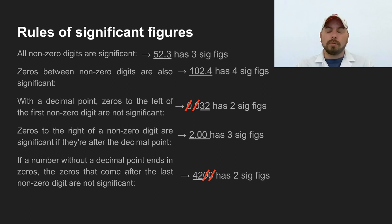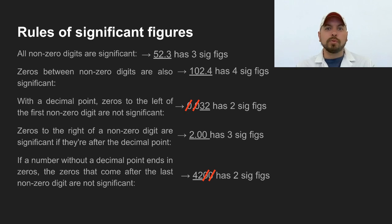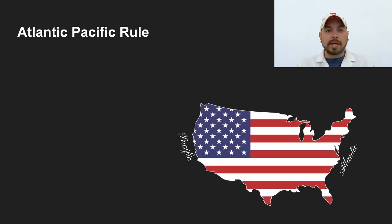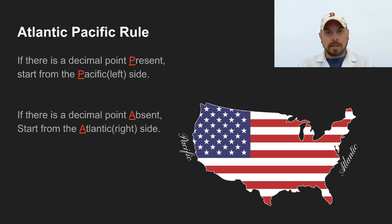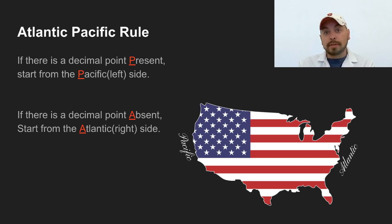If you're struggling with all those rules, here's a trick called the Atlantic-Pacific rule. The Atlantic Ocean is on the right side of the United States, and the Pacific Ocean is on the left side. If a decimal point is present — like the Pacific — you start on the Pacific side, the left side, and eliminate any zeros from the farthest left all the way up to the first non-zero number. At that point, any number from that point to the right is significant.